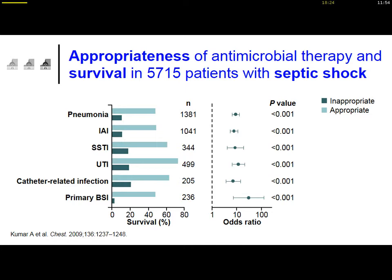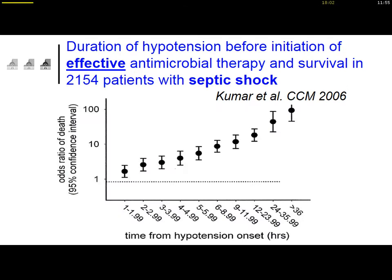Pneumonia, intra-abdominal infection, skin and soft tissue infection, UTI, and so on — in every type of infection, the appropriateness of antimicrobial therapy is directly related to survival. But not only do we need to be appropriate and adequate, we need to be so as soon as possible, and this is also a key issue.